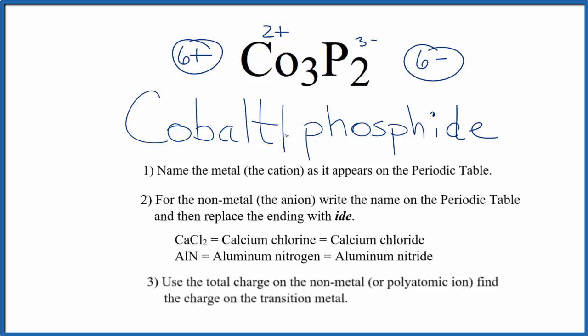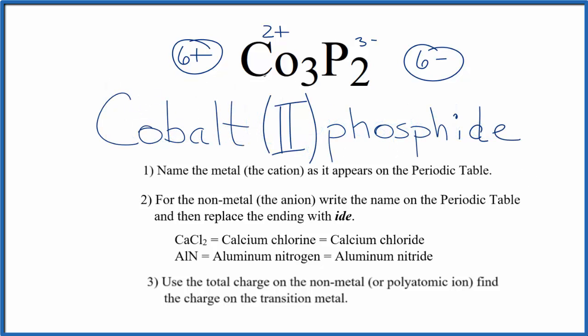So we're going to write a Roman numeral two in parentheses between the names. That makes the name for CO3P2 cobalt two phosphide, and the two comes from the two plus charge on the cobalt.